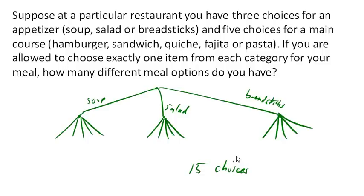That is how many meal options we have. Now you may have noticed — where does that 15 come from? Well, it's three choices for our first decision times the five choices for the second decision, because we have three of these little branchy tree things. So we end up multiplying those choices together, and that's exactly how this works.